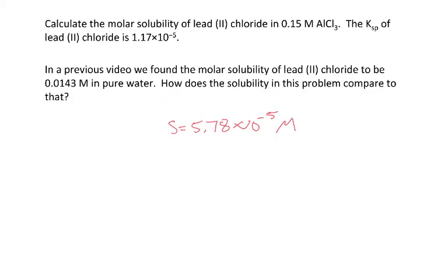In that previous problem, using pure water, we found the solubility of lead(II) chloride to be 0.0143. We can see, due to the common ion effect, the solubility in this problem, when the solution already contained chloride ions, is much less—I can dissolve much less lead in that solution.